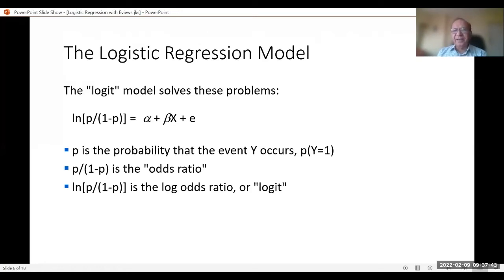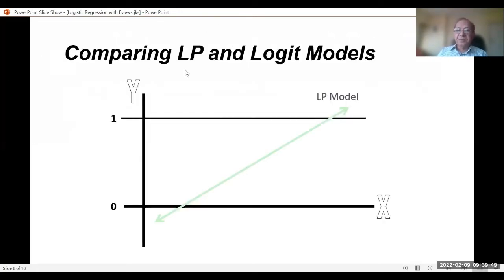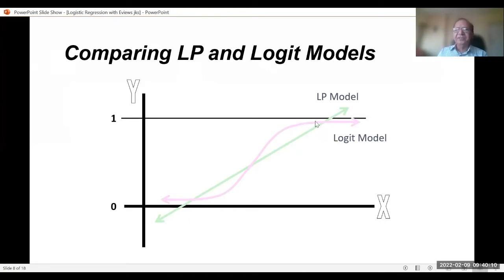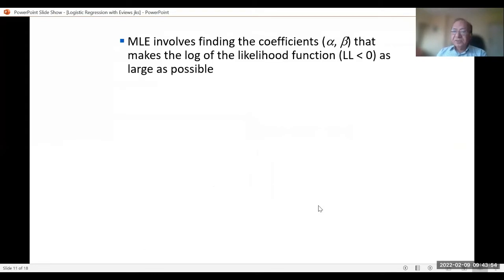Here p is the probability that event Y occurs, and p/(1−p) is the odds ratio. The log of the odds ratio — log(p/(1−p)) — is called the logit. Comparing the linear probability model with the logit model: the linear model crosses the 0 and 1 lines, which we don't want. But the logit model remains within 0 and 1 — that is the key benefit of the logit model used in logistic regression.